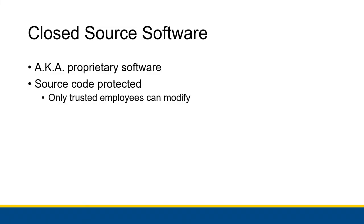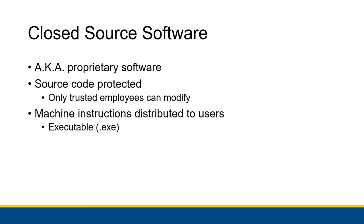This is as opposed to closed source software, also known as proprietary software. This is the kind of stuff that Microsoft is releasing — Microsoft Word, Excel, all that kind of stuff — but they don't let you see the source code. Only trusted employees are able to modify that source code. Instead, what they do is distribute the machine instructions to users in the form of some kind of executable program. On Windows that's going to be a .exe file or sometimes an MSI. They're distributing machine instructions that allow users to run the program, typically with some kind of license they have to pay for. If you are not able to see how your program works, then you're running closed source software.